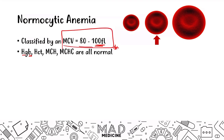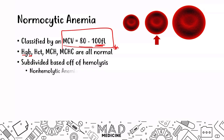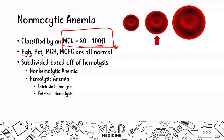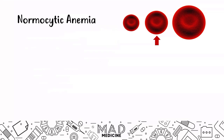Normocytic anemias can be subdivided based off of hemolysis — positive, where you do have hemolysis, or when you don't have hemolysis. When you do have hemolysis in a hemolytic anemia, you can break it down into intrinsic and extrinsic causes — problems within the cell and problems outside of the cell.